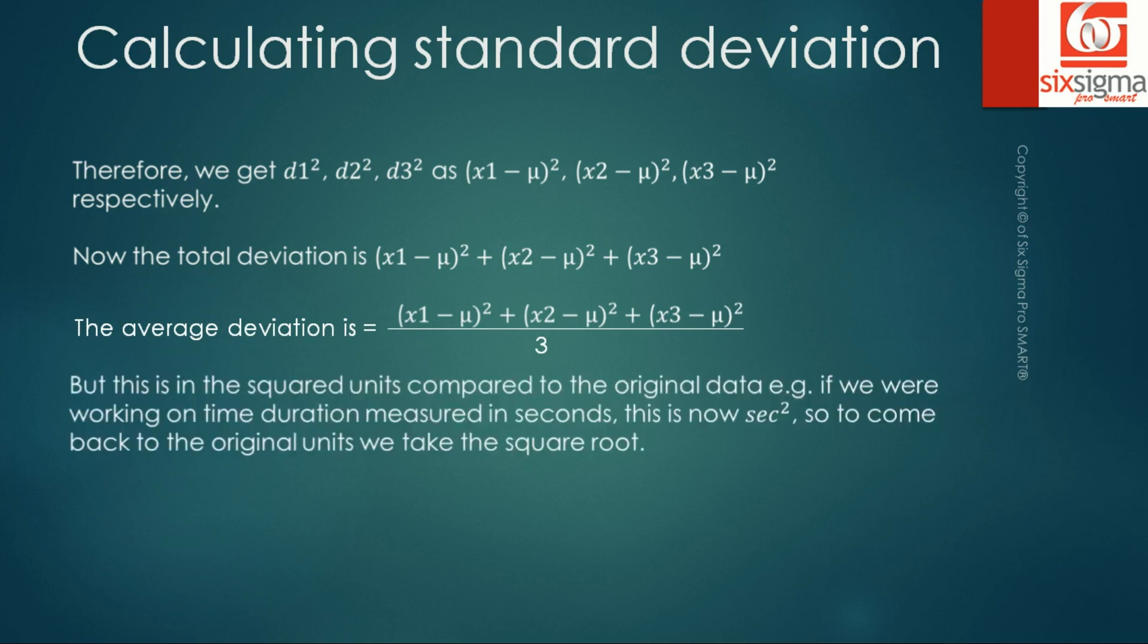But what we've done now is that we have squared the units compared to the original data. For example, if you're working on the time duration measured in seconds, it is now second squared. So to come back to the original units, we take the square root.